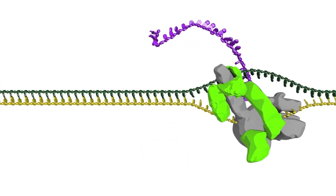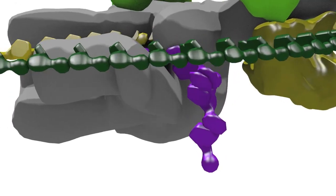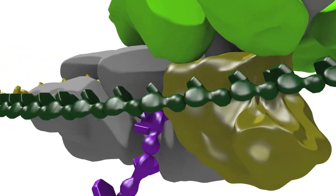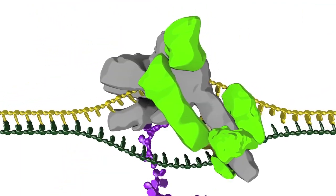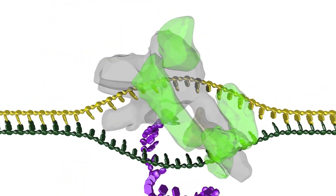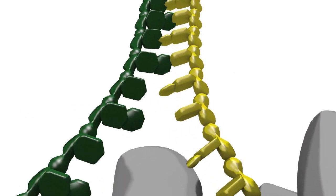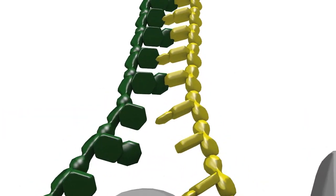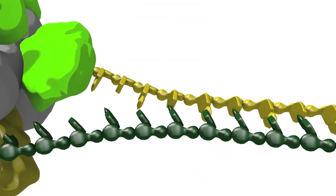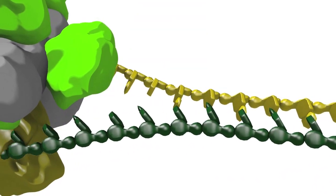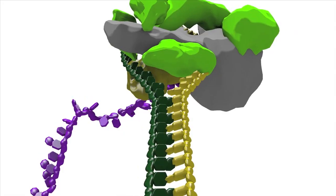RNA polymerase has now transitioned into the elongation phase. During this phase, the growing RNA strand comes out of the RNA polymerase exit channel as it continues to elongate. The transcription bubble moves along with the RNA polymerase. DNA base pairs are separated ahead of the transcribing polymerase to expose more of the template strand, while bases in the wake of the polymerase re-anneal. In this way, RNA polymerase can continue until it has transcribed the complete RNA.